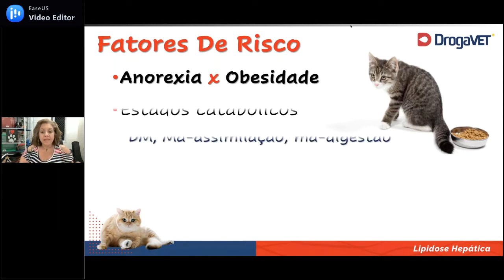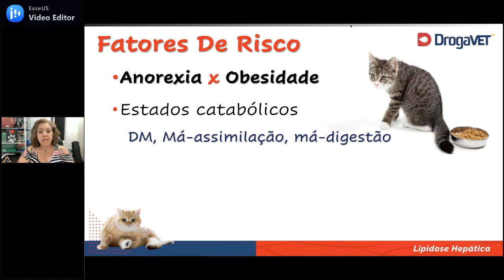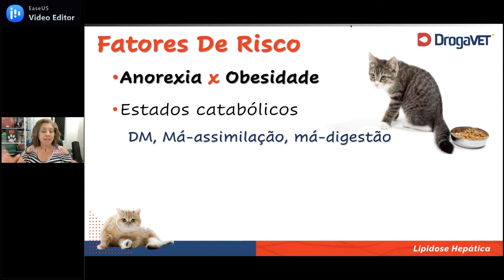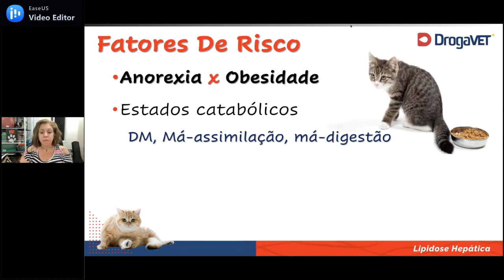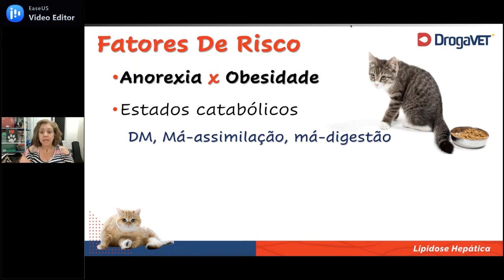Um exemplo clássico é quando a gente pensa em doenças que determinam estados catabólicos. Diabetes mellitus é o grande exemplo. Você tem um paciente que come, come, come e começa a emagrecer, porque ele não consegue colocar glicose para dentro da célula pela falta de receptores ou pela falta da própria insulina. Apesar de ele estar comendo muito, não está em anorexia, mas começa o emagrecimento progressivo. E a gente sabe que o gato mais predisposto a diabetes é o gato obeso.